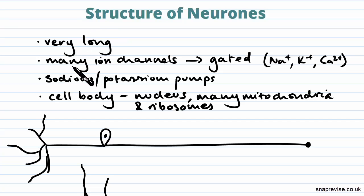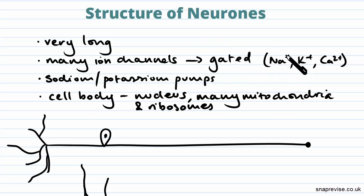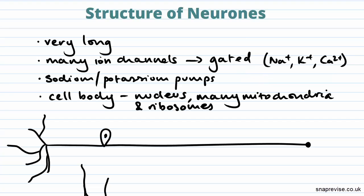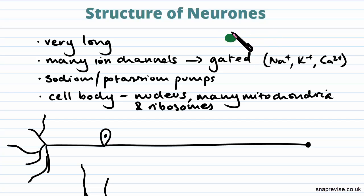Neurons also contain many ion channels in their plasma membranes. These ion channels are said to be gated and can conduct currents carried by sodium ions, potassium ions, or calcium ions. They're called gated ion channels because they're not necessarily open all the time — something needs to happen to those ion channels in order for them to open.